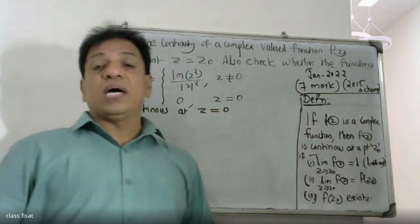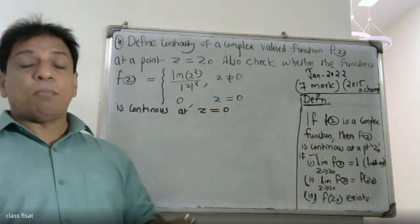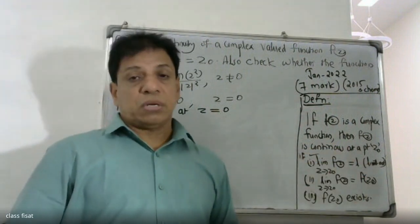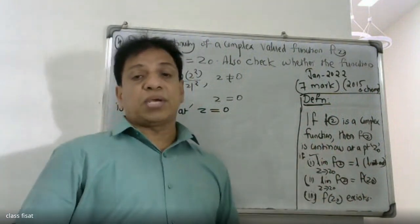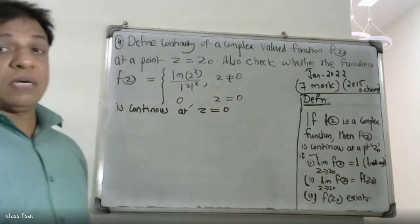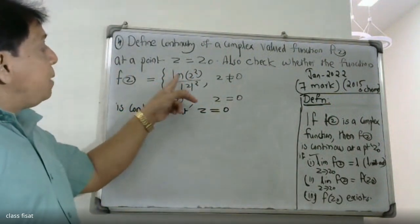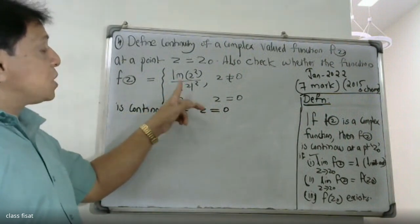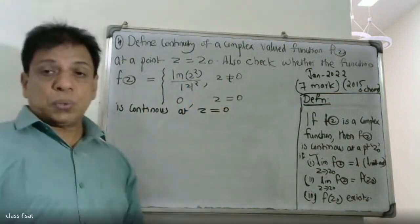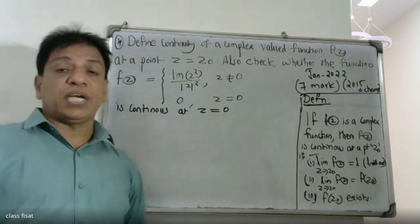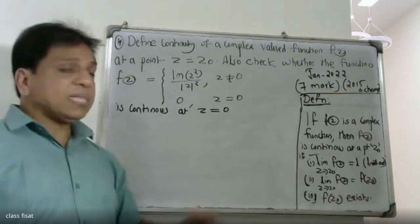Now we check whether the function f of z equals imaginary part of z² divided by |z|² is continuous at z equals zero. We need to check the conditions.